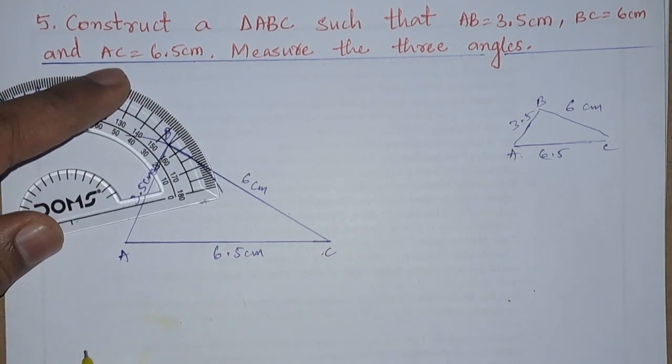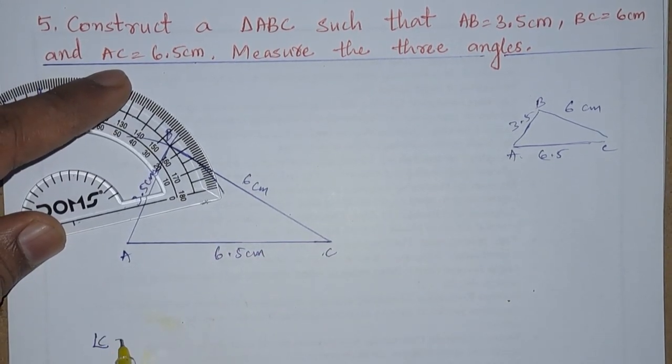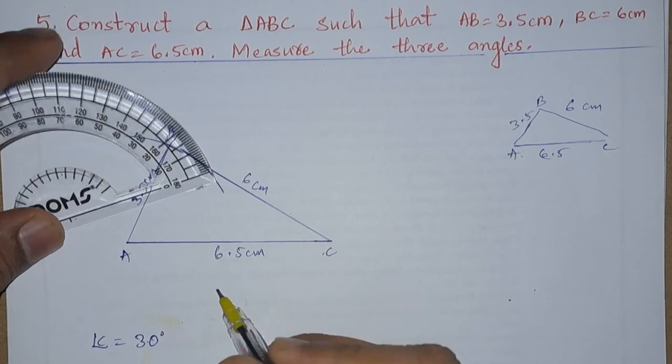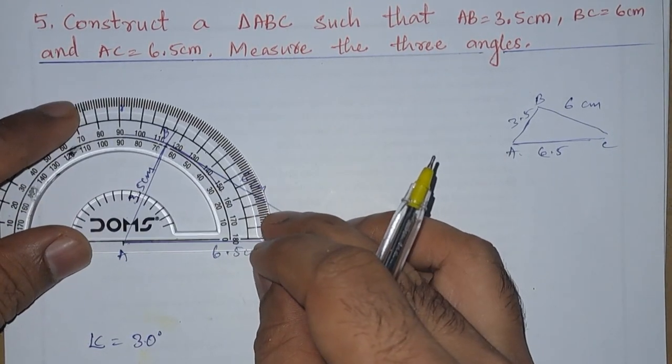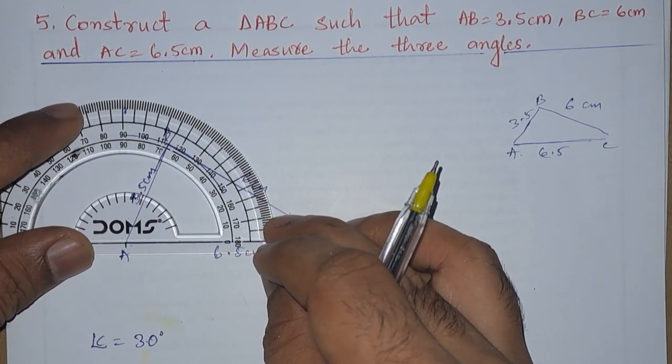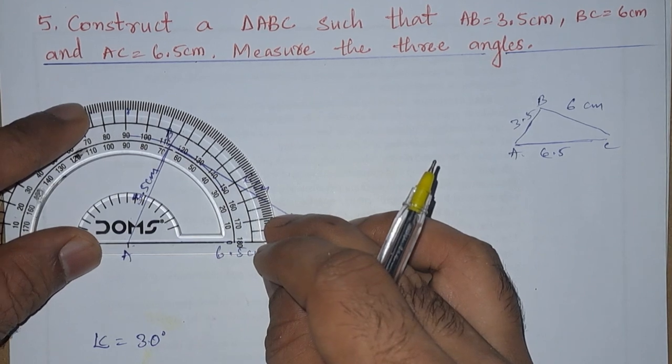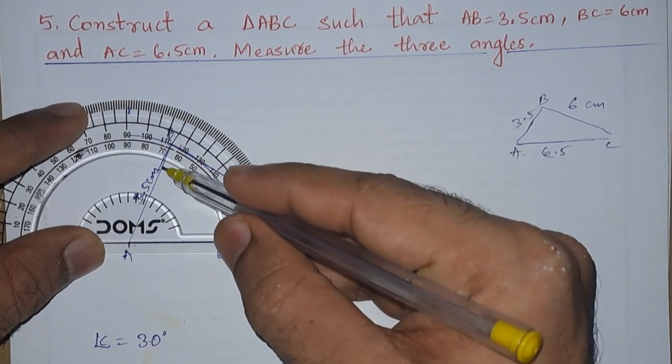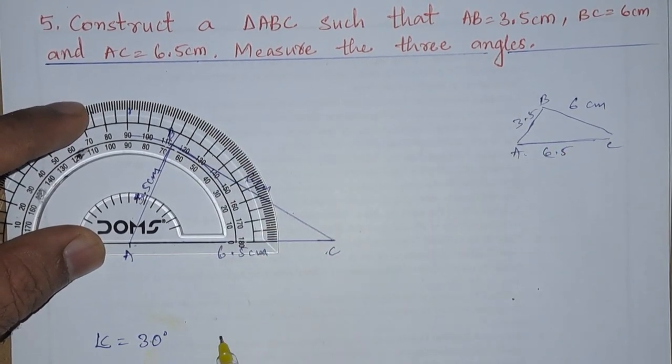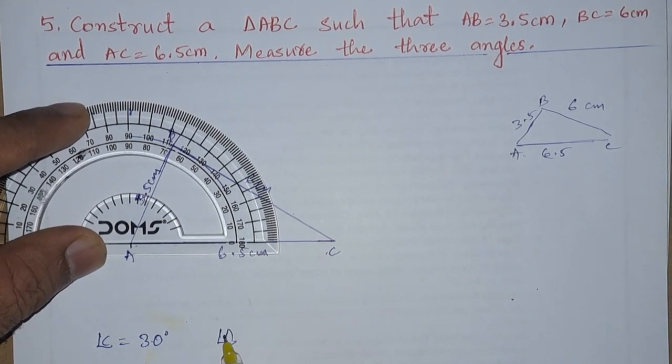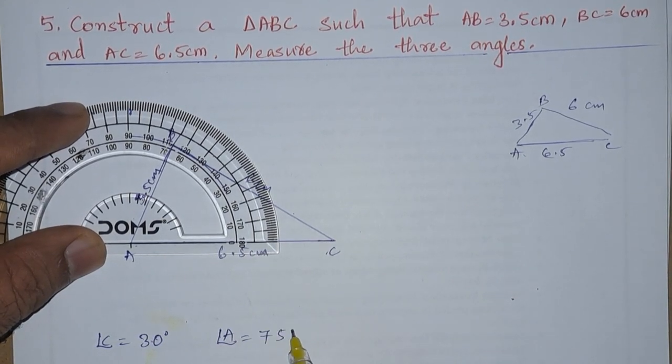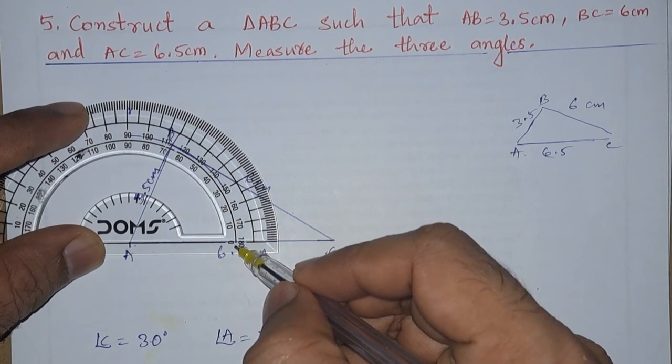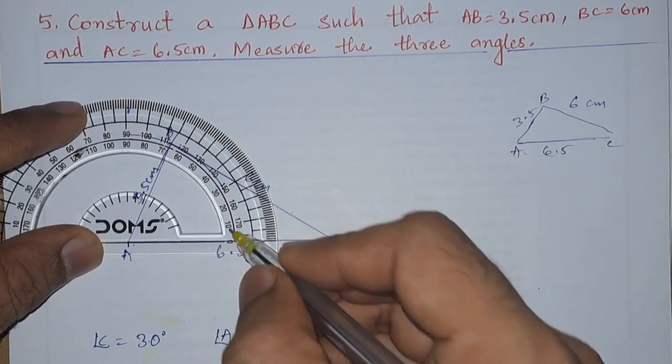So angle C is 30 degrees. So let me write here, angle C is 30 degrees. Next from A. Now we will get from A. If we measure, we are getting nearly 75, so angle A is equals to 75. We have to check from here. Sorry, it is 65.